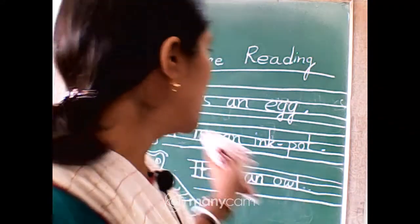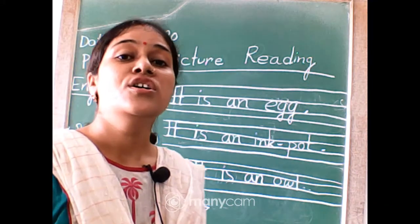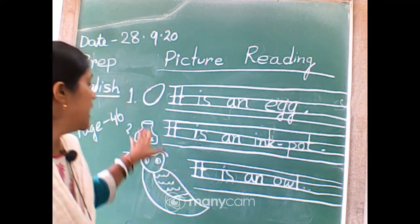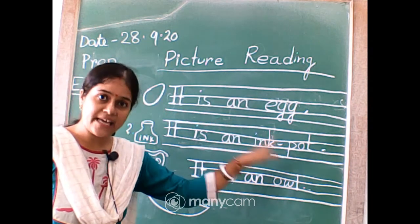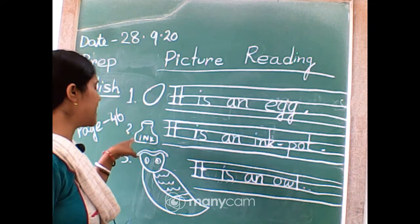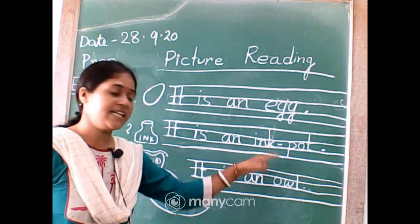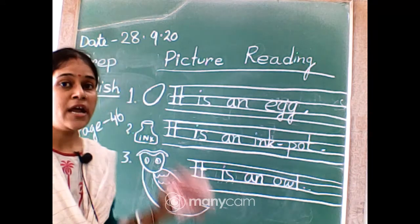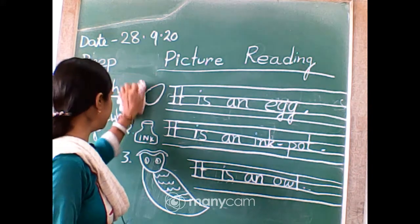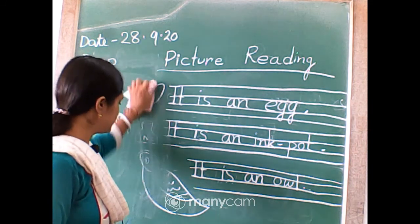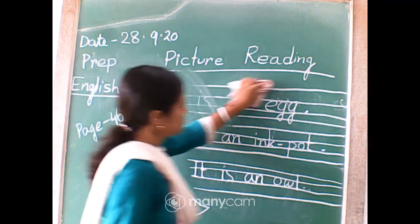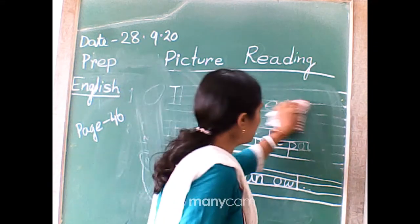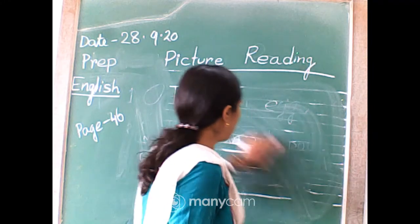In this activity you will just answer on your chat box — no need to write anything. First sentence: it is an egg. Second sentence: it is an ink pot. Third: it is an owl. Now I am rubbing the board. You must maintain your file.